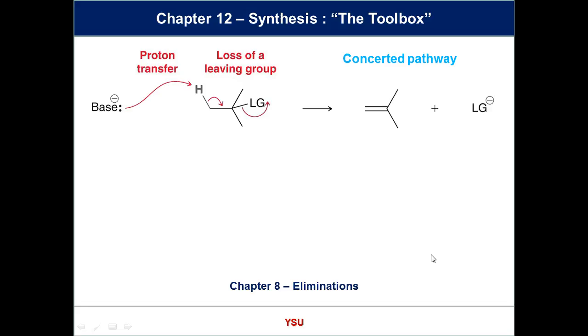So substitutions, if you just want to swap something out at SP3 carbon, you do a substitution reaction, be it an SN1 or SN2. Which was more useful? SN2 or SN1, which is more predictable? Why? What happens in SN1? Rearrangements and stuff like that. It gets a bit messy. But they both work.